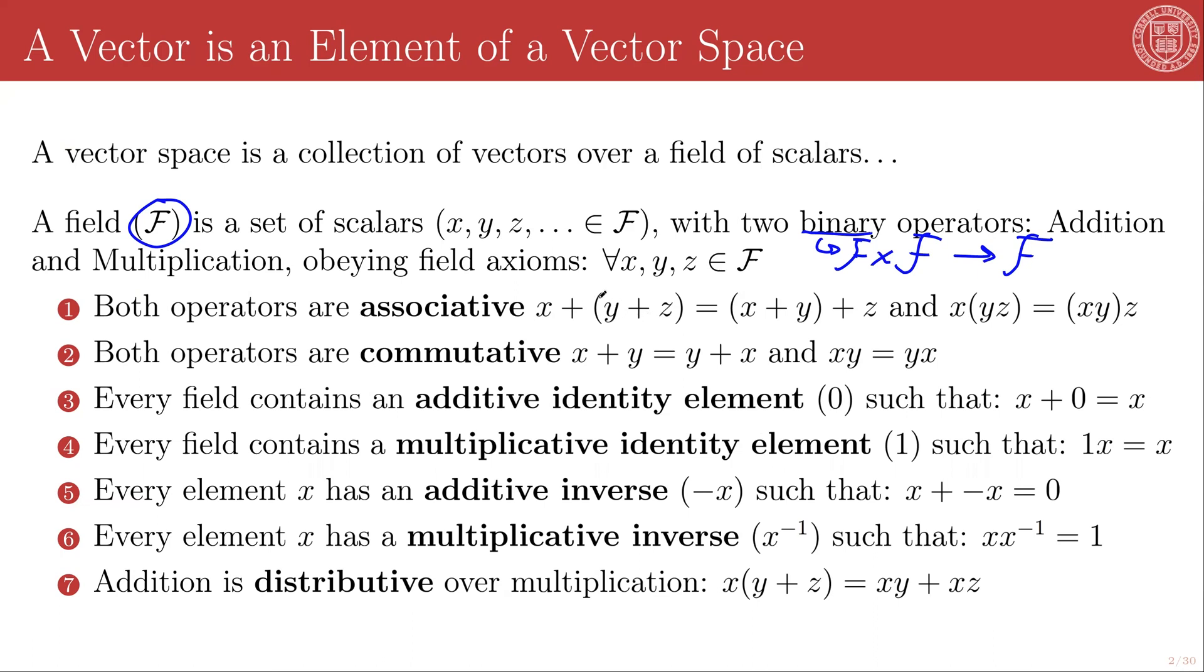And these binary operators don't need to be specifically defined. They just have to obey these seven field axioms. I've stated them as seven. Sometimes they're written out in slightly different forms, but these are the basics of what these operators have to obey. So both operators have to be associative, and so x plus the quantity y plus z is the same as the quantity x plus y plus z, and the same for the multiplication operator. In your head, you can map these to addition and multiplication as defined on the real numbers, because the real numbers are a field.